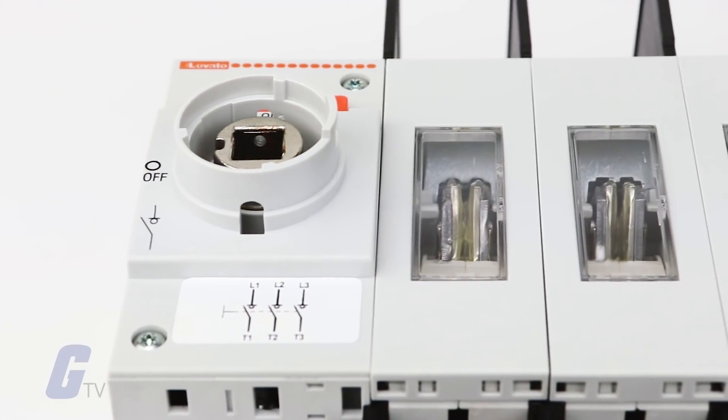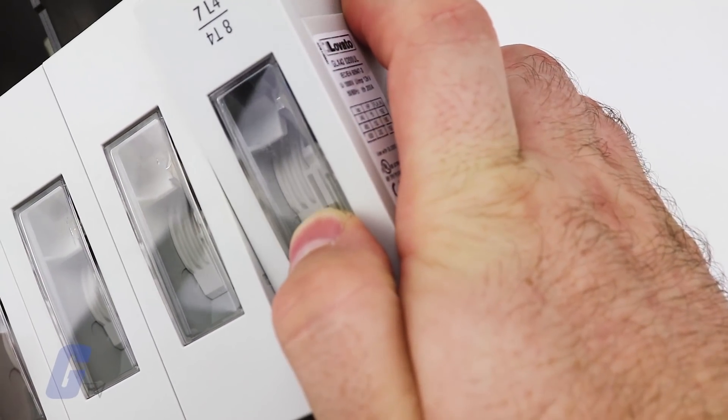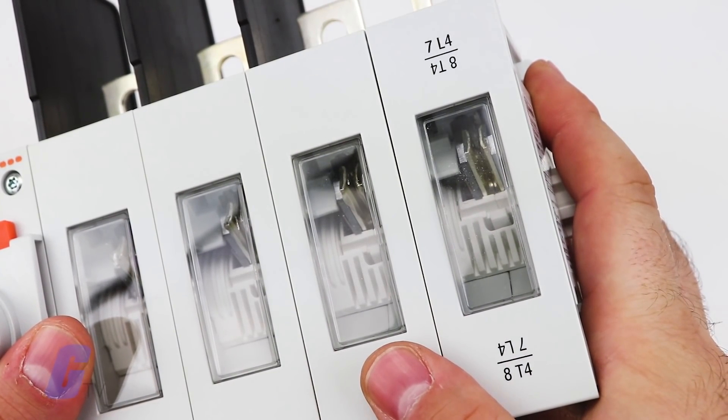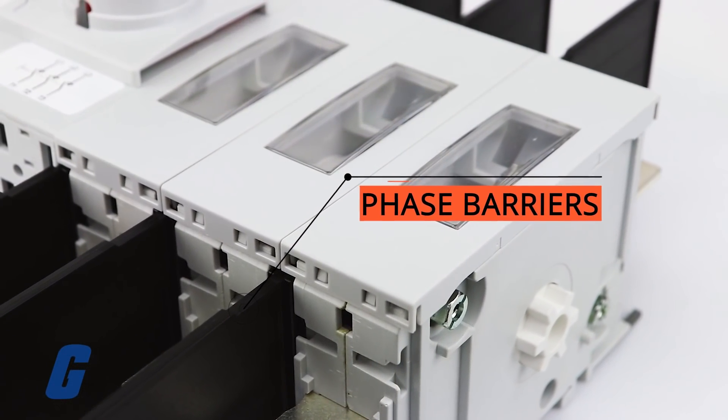The GL series comes standard as a three-pole switch but a fourth pole can be added in the form of an add-on accessory. The phase barriers are integrated as standard to comply with UL98.